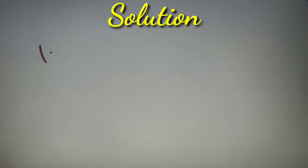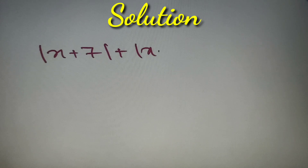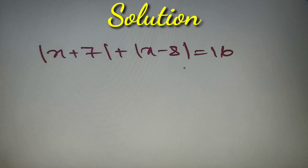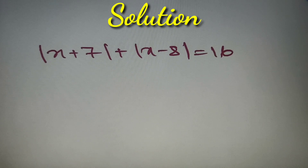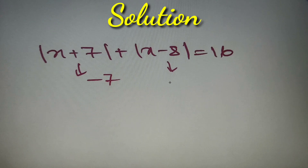According to the given question, we are given a linear equation in x such that |x + 7| + |x - 8| = 16, and we have to find the sum of all the possible values of x. To solve questions on the topic of modulus, we first need to find the critical points. The first modulus has its critical point at -7 and the second modulus has its critical point at +8.